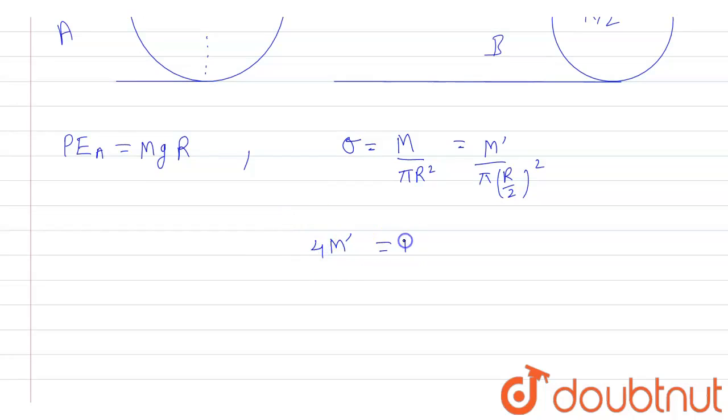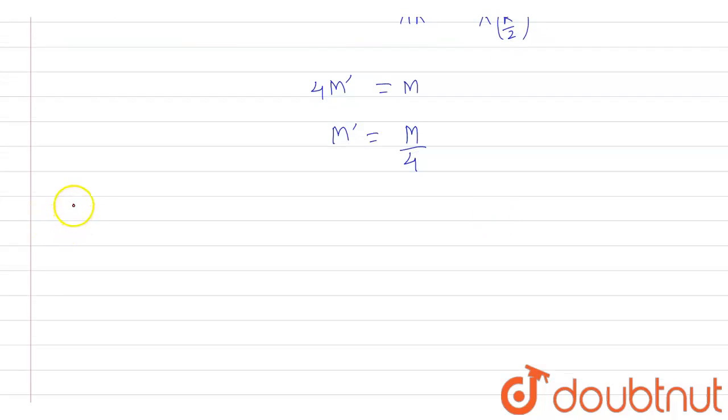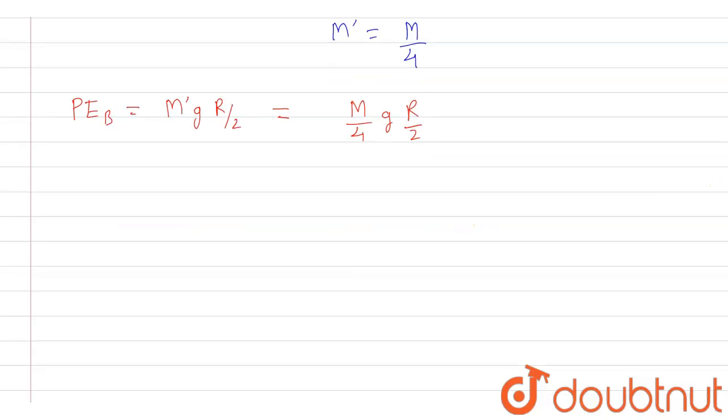M dash into 4 is equal to capital M, or we can say M dash is equal to capital M by 4. So this is the value of M dash. So now the potential energy of B will be equal to M dash g into R by 2, or we can say M by 4 into g into R by 2. So potential energy of B will be equal to M g R by 8.